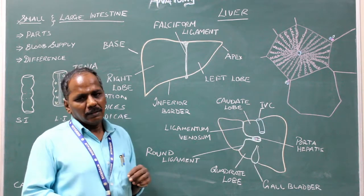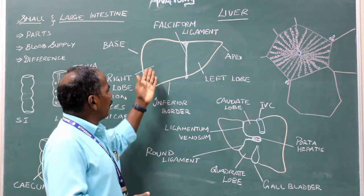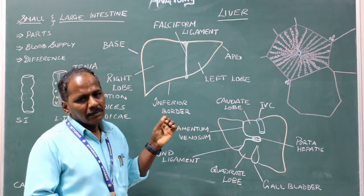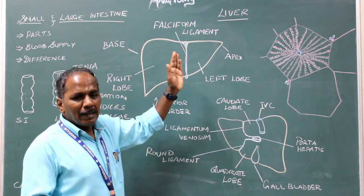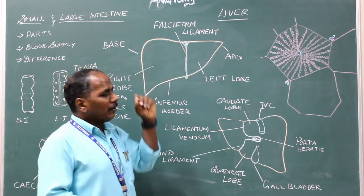Lobes of the liver: It consists of two lobes, right lobe and left lobe. Right lobe is larger than left lobe and separated anteriorly by falciform ligament.